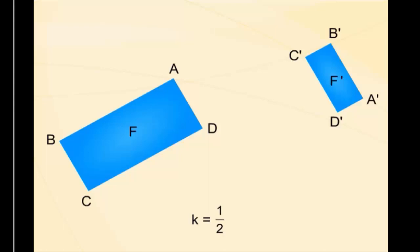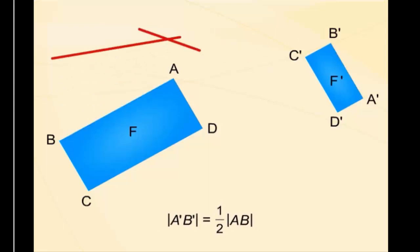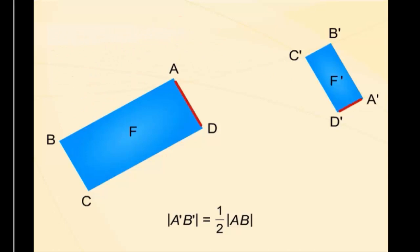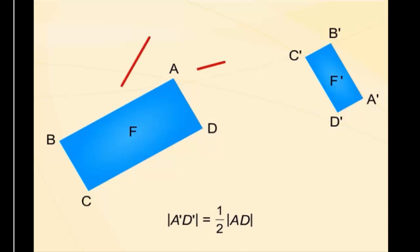Давайте поближе взглянем на это преобразование. Длина стороны H'B' равна половине стороны AB. Также длина стороны H'D' равна половине стороны AD.